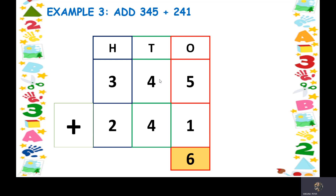In the tens place, keep 4 in your mind and here again we have 4. Take out 4 fingers and count ahead — so we get 5, 6, 7, and 8. Now in the hundreds place we have 3 and 2. Keep 3 in your mind, take out 2 fingers and count forward — so we get 4 and 5. The final answer is 586.